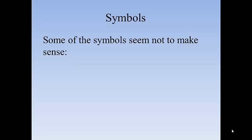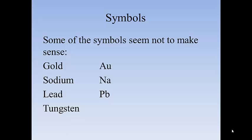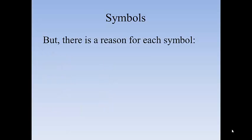On the other hand some of the symbols seem not to make sense. Gold is Au. Sodium is Na. Lead is Pb. Tungsten is W. But you know a little bit about the history of the periodic table and you find out there's a reason for each symbol.